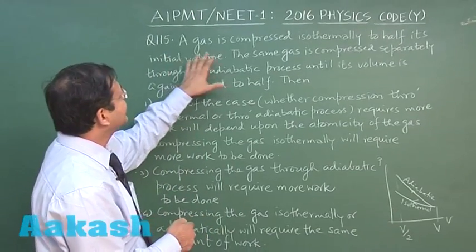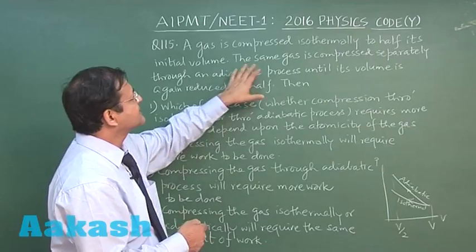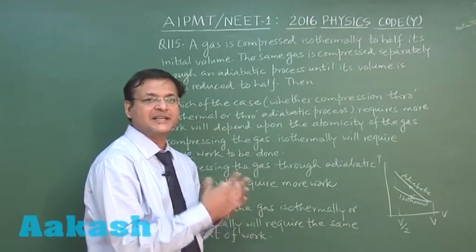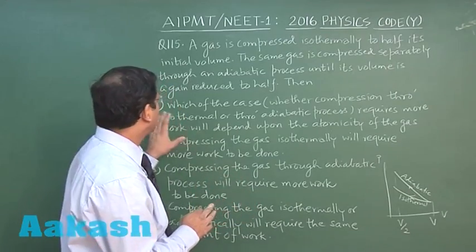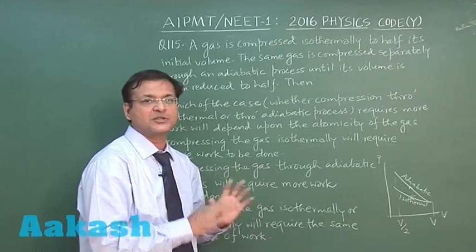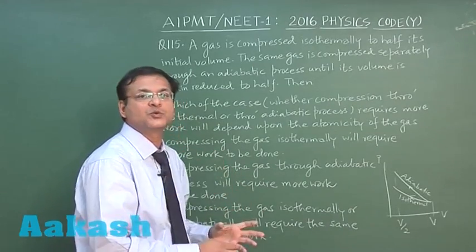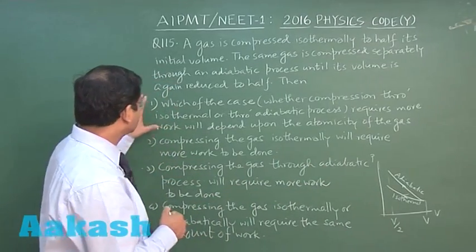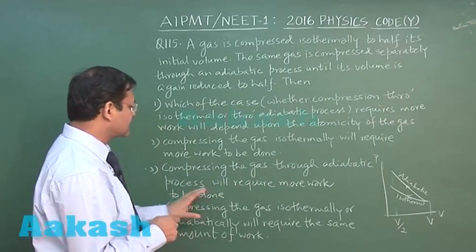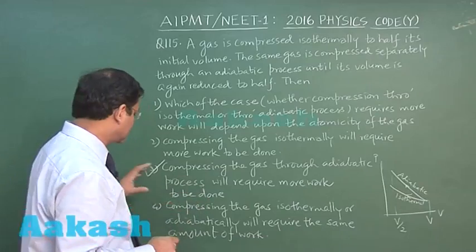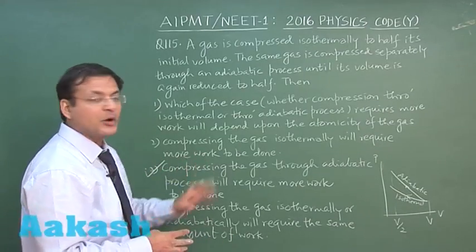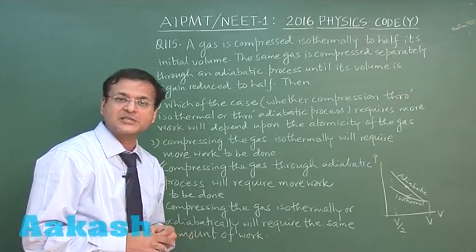So the options are something like that. Now the question reads that a gas is compressed isothermally to half its initial volume. The same gas is compressed separately through an adiabatic process as I have mentioned here until its volume is again reduced to half. In both the cases, the initial and final volumes are V and V by 2 respectively. Now which of the case, whether compression through isothermal or through adiabatic process requires more work, will depend upon the atomicity of the gas. This is not the scene whether it is monatomic, diatomic or triatomic. This will always be true that adiabatic compression will be requiring more work. So this is not the correct option. Second one is compressing the gas isothermally will require more work to be done, wrong answer. Compressing the gas through adiabatic process will require more work to be done. This is the correct answer, answer 3. Fourth option says that compressing the gas isothermally or adiabatically will require the same amount of work. This is not the correct option. We have marked option 3 for question 115.